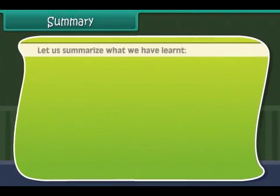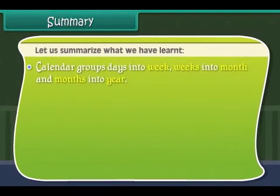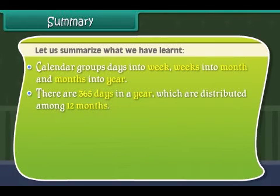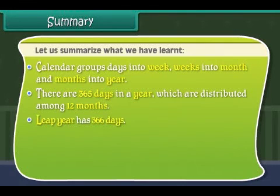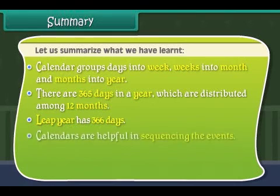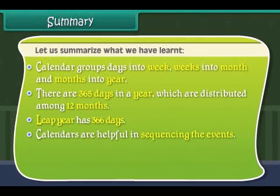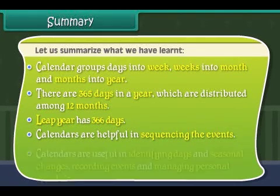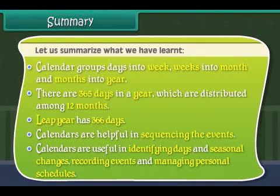Summary: A calendar groups days into weeks, weeks into months, and months into a year. There are 365 days in a year distributed among 12 months; a leap year has 366 days. Calendars are helpful in sequencing events, identifying days and seasonal changes, recording events, and managing personal schedules.